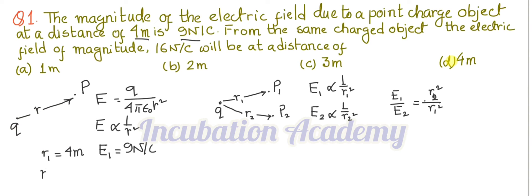What will be the value of R2 when the electric field is 16 Newton per Coulomb? I am putting this in the equation we just understood. What is E1? E1 is 9. What is E2? E2 is 16.